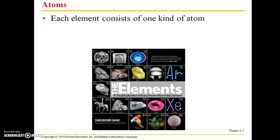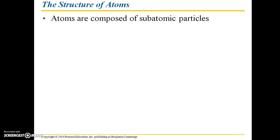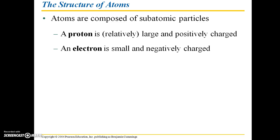Each element consists of one kind of atom. An atom is the smallest unit of matter that still retains the properties of an element. Atoms themselves are composed of subatomic particles. Subatomic just means below the atom level. A proton is a relatively large and positively charged subatomic particle. An electron is small and negatively charged. And a neutron is large and electrically neutral.